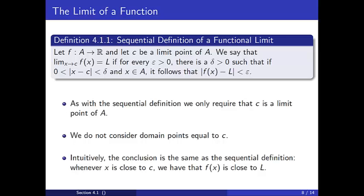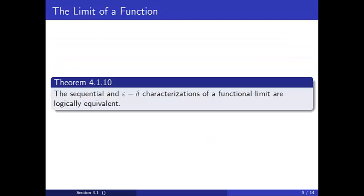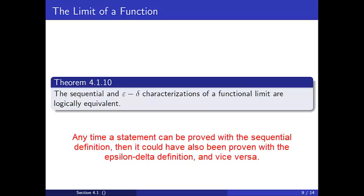Lastly, the conclusion of the definition is intuitively the same as the sequential definition. To call L the limit of f at c, we must show that f of x is close to L whenever x is close to c. As it turns out, our two definitions of a functional limit are logically equivalent, meaning that any time a statement can be proved with a sequential definition, then it could have also been proven with the epsilon-delta definition, and vice versa. We will prove this equivalence in class.